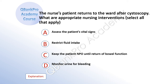The nurse's patient returns to the ward after cystoscopy. What are the appropriate nursing interventions? Select all that apply. A: assess the patient's vital signs. B: restrict fluid intake. C: keep the patient NPO until return of bowel function. D: monitor urine for bleeding.